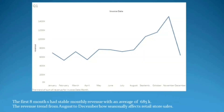In reference to the first question, this graph represents that the first 8 months had a stable monthly revenue with an average of 685K. The graph also represents the revenue trend from August to December, showing the effect on retail store sales.